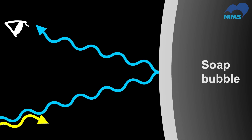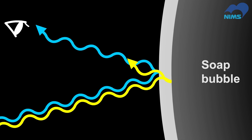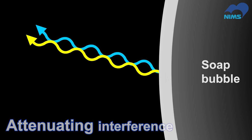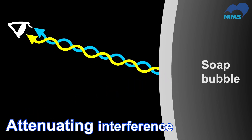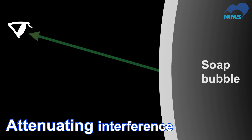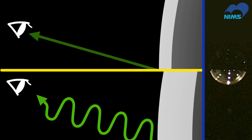However, when the film becomes thinner, the reflected rays interfere destructively and cancel each other out. Thus, the bubble becomes nearly invisible.